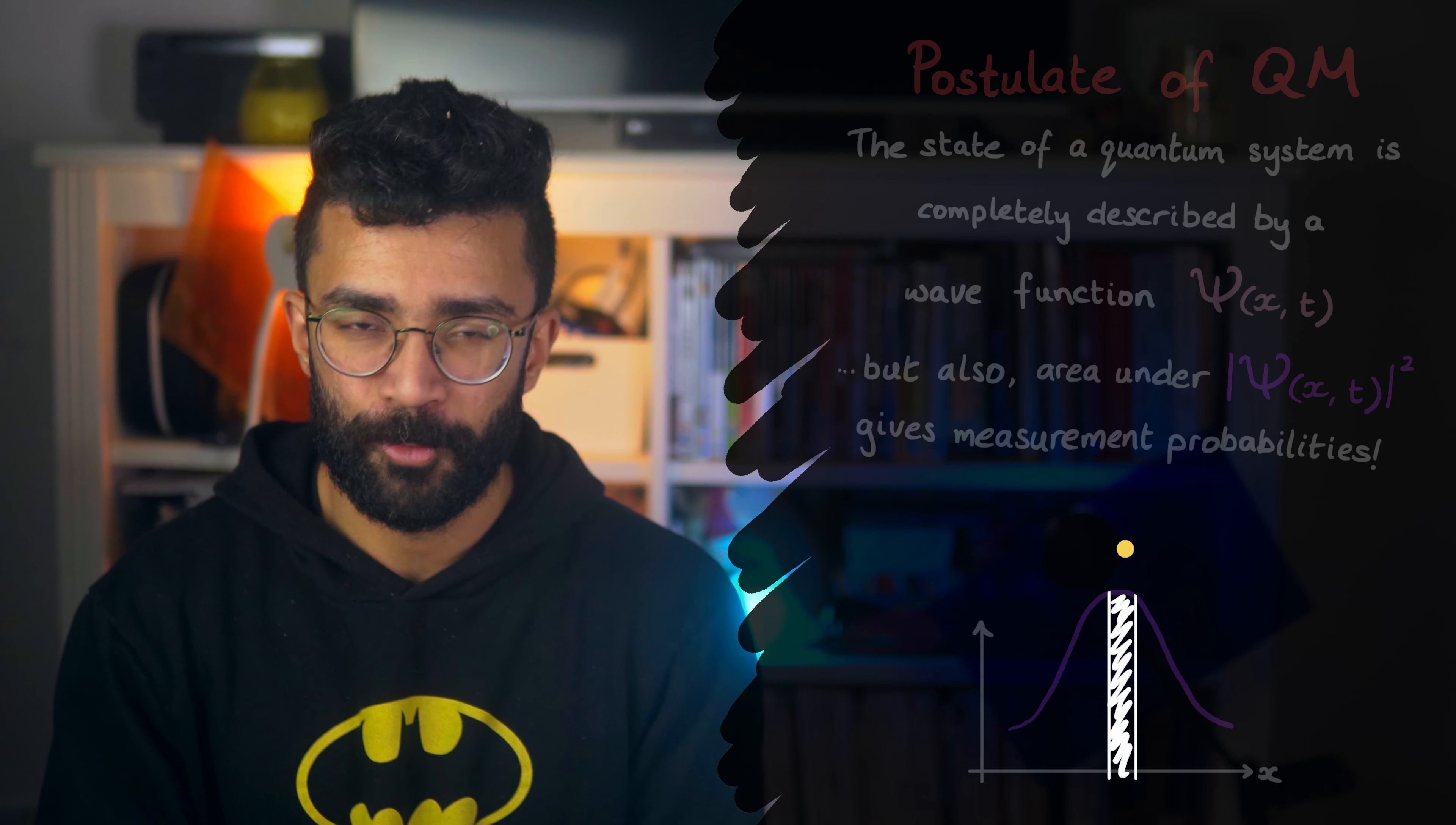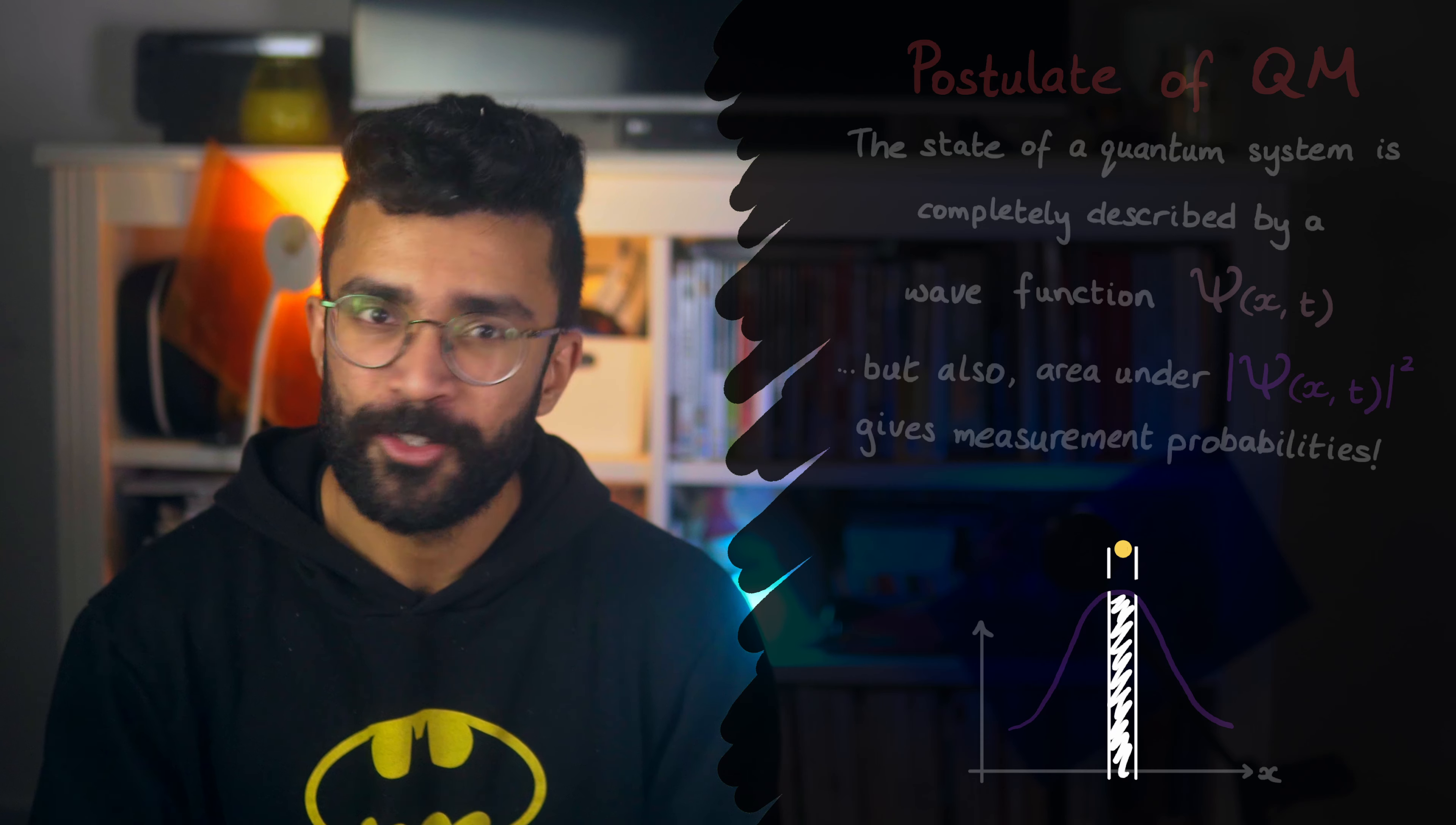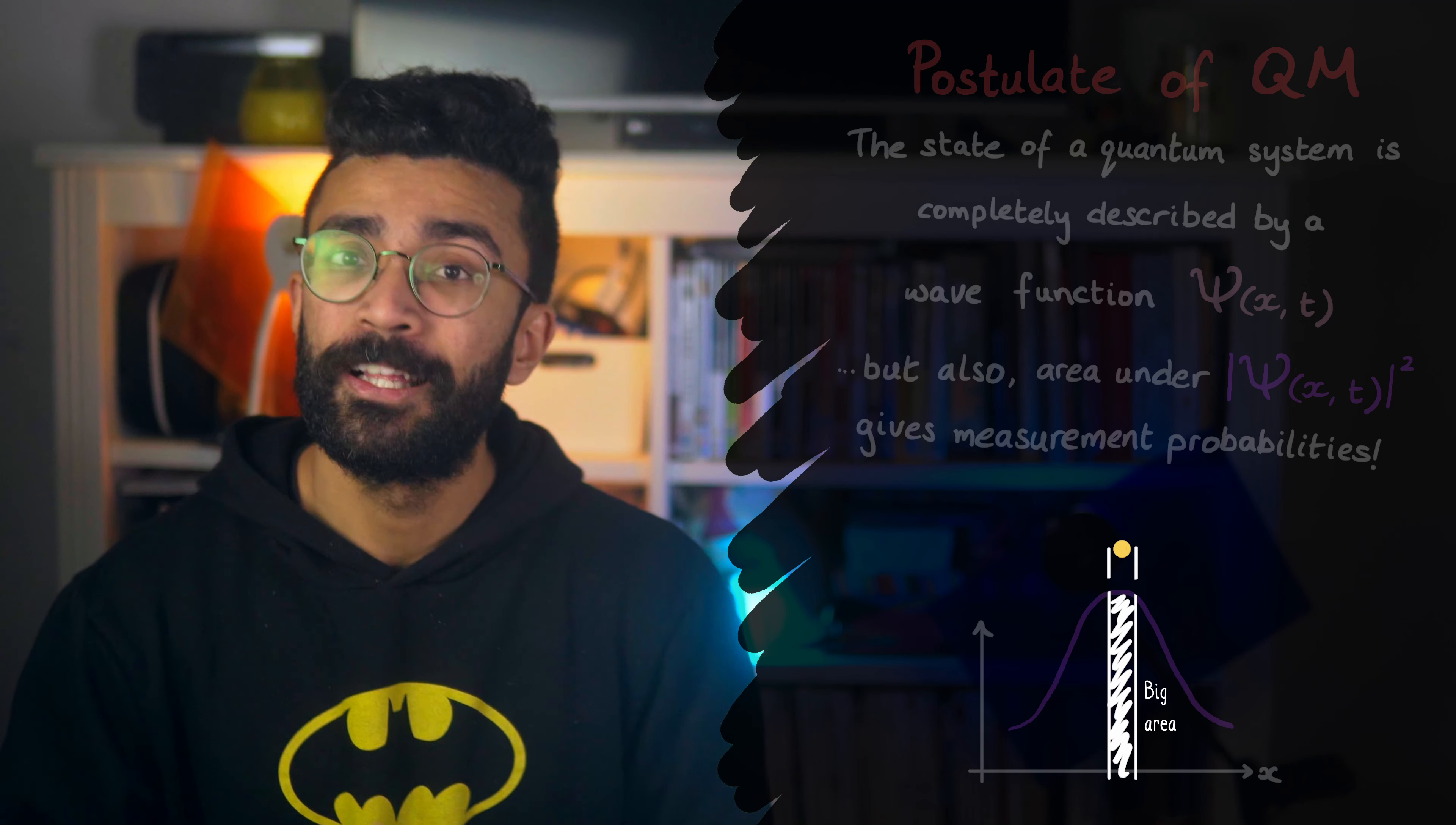This area gives us the probability of finding our electron here, between these two points. So we're more likely to find our electron between these two points, for example, than these two.